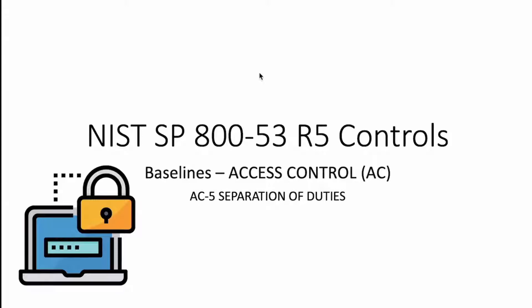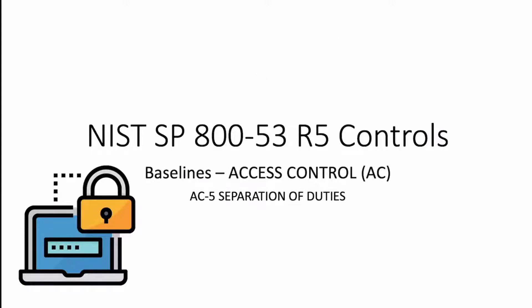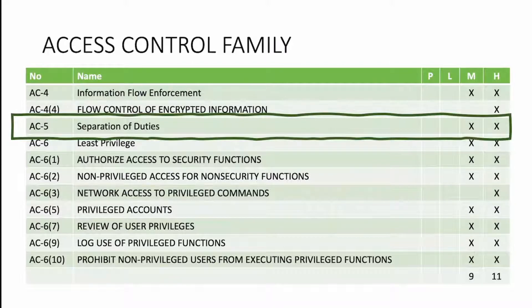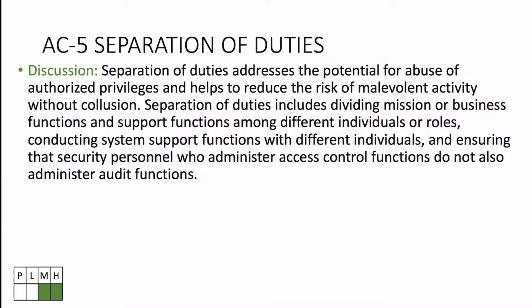This is NIST 800-53 Revision 5 controls — the baseline controls as defined by 853B, the baseline document. AC-5 Separation of Duties is included in the moderate and high baseline but not in the low baseline, and it's not a privacy control. Organizations can add it or tailor it out as needed.